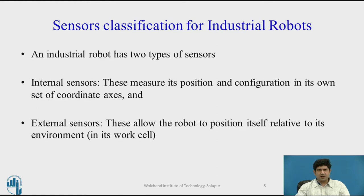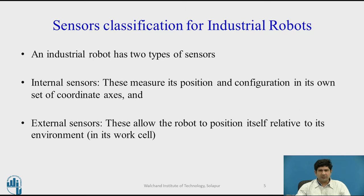When we look at robot sensors in particular — and this is not just for industrial robots, a similar classification applies for mobile robots as well — industrial robot sensors are typically classified as internal or external. All industrial robots have servo-controlled joints and there is a need to know the correct position and velocity of the joint. For this we have encoders, which are the best example of internal sensors. These measure the position and configuration in their own coordinate axes. External sensors, on the other hand, allow the robot to position itself relative to its environment, within its work cell, and include proximity sensors, force sensors, and vision systems.